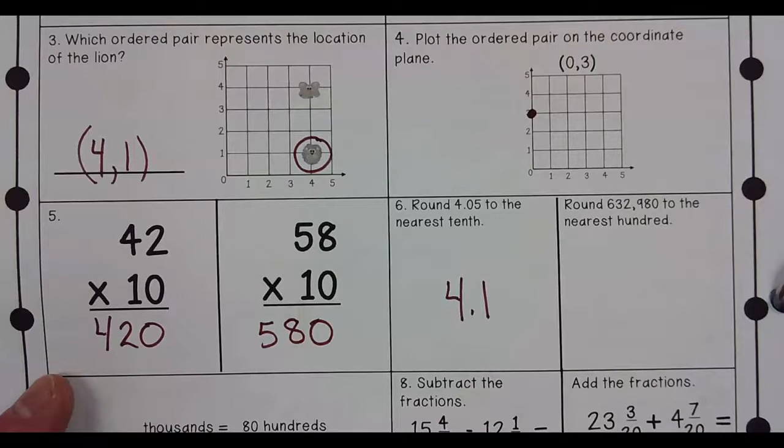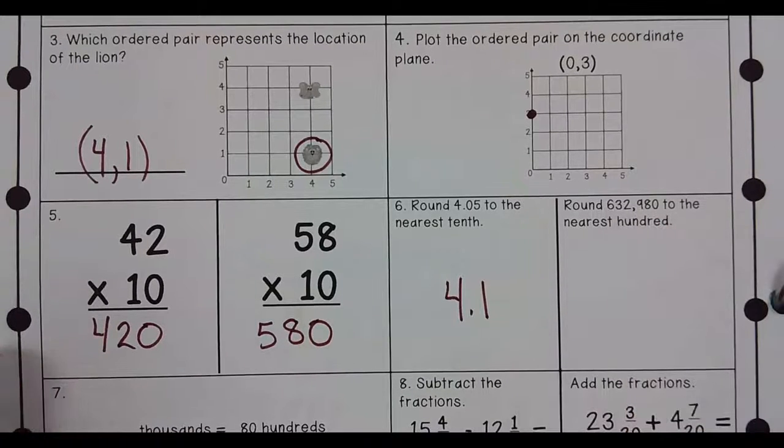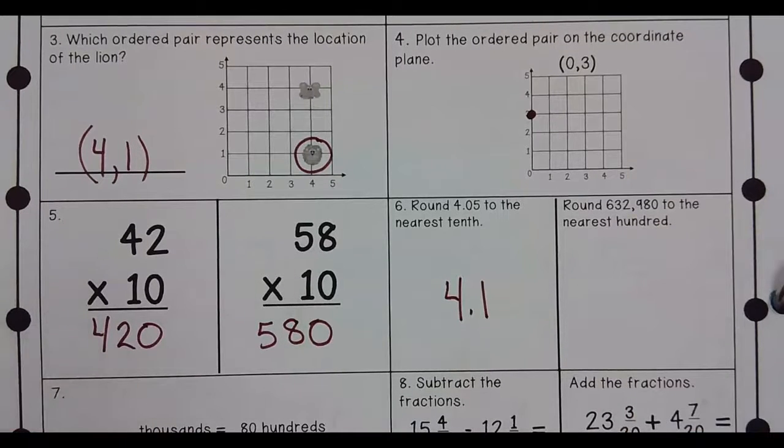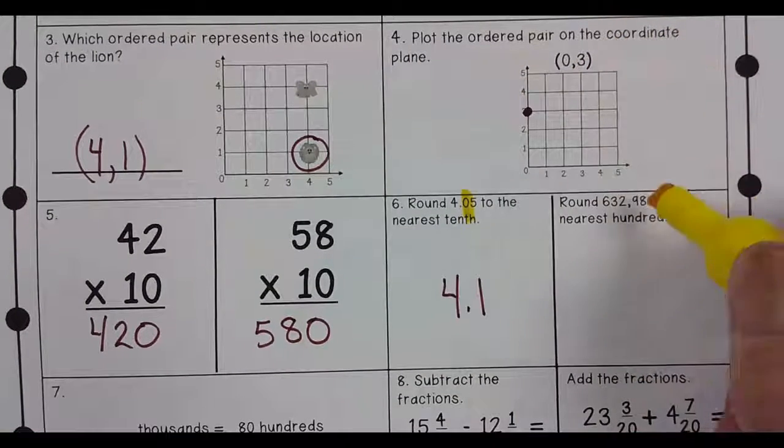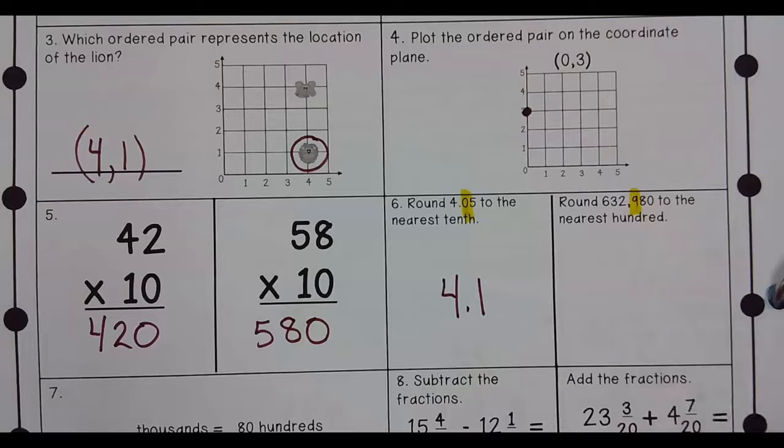Round 632,980 to the nearest hundred. I would highlight... Sorry, I should have done that last time. I would highlight this one. I would highlight to the nearest hundred. This is the nearest hundred.